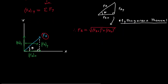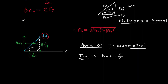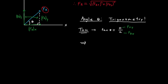To solve for the angle specifying the direction of the resultant force, we apply trigonometry. From the sketch we have a right triangle with an opposite side and an adjacent side, so we use tangent: tangent theta equals opposite over adjacent. Here FRy is on the opposite side and FRx is on the adjacent side. Solving for theta gives theta equals tangent inverse of FRy over FRx.